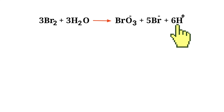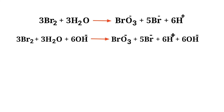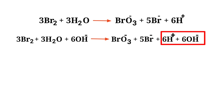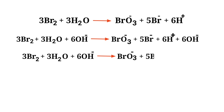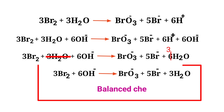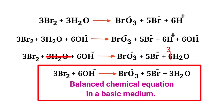For a reaction in basic medium, add one OH⁻ for every H⁺ present in the equation. The OH⁻ must be added to both sides to keep charge and atoms balanced. Then combine OH⁻ and H⁺ on the same side to form water, and cancel any identical terms that appear on both sides.